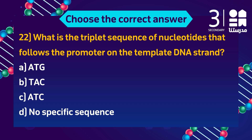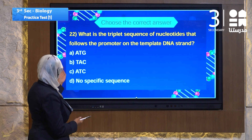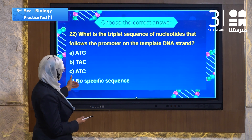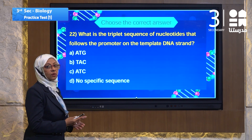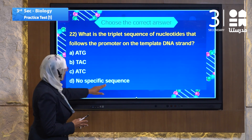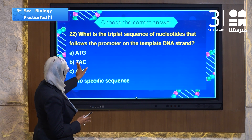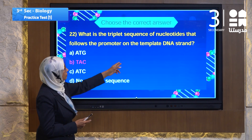Question 22: What is the triple sequence of nucleotides that follows the promoter on the template DNA strand? The promoter is the start point of the DNA strand. The RNA will be formed from this point, so the answer must be TAC — it is the promoter sequence on the DNA template strand.